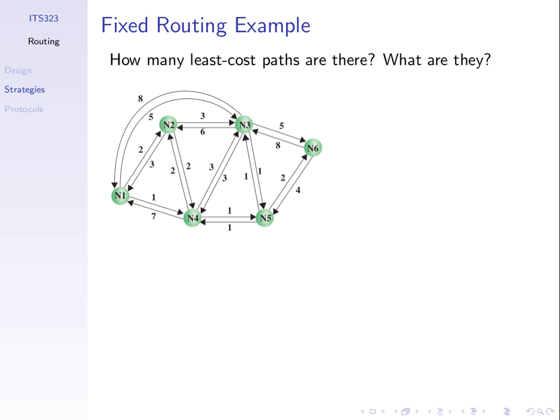We use those least cost routes to create routing tables. The routing tables store the destination and the next node in the least cost route. For example, the least cost route from node one to node six is 1, 4, 5, 6. The routing table for node one would store destination six, next node four. When node one has a packet to send to node six, it sends it to node four by looking up the routing table. If we have a least cost route 1, 4, 5, 6, then segments within that route are also least cost routes.